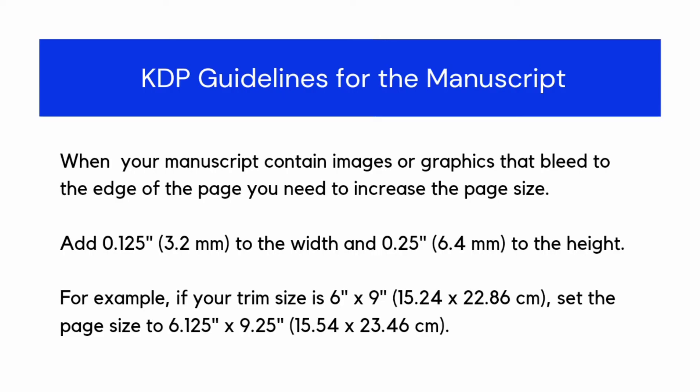KDP guidelines for the manuscript: when your manuscript contains images or graphics that bleed to the edge of the page, you need to increase the page size — add 0.125 inches to the width and 0.25 inches to the height. For example, if your trim size is 6 by 9, set the page size to 6.125 by 9.25 inches.